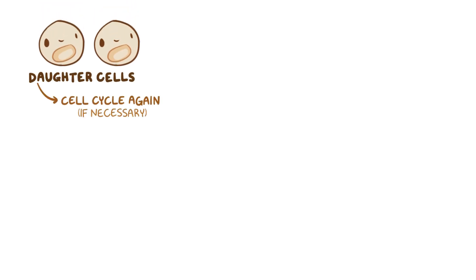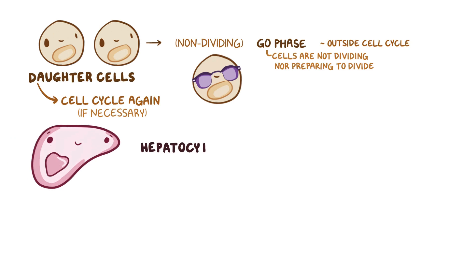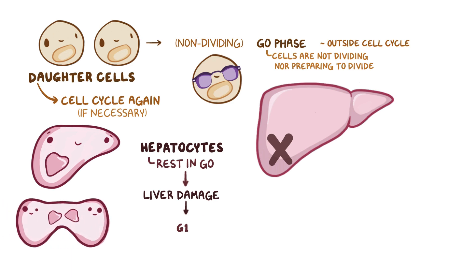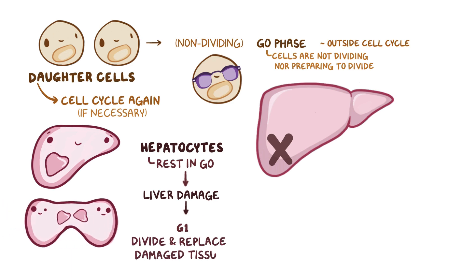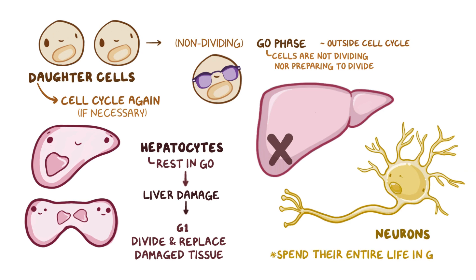Both daughter cells can enter the cell cycle once more if they need to. If they don't, they enter the non-dividing G0 phase. G0 is considered to be a phase outside the cell cycle, because while the cells are living, they're neither dividing nor preparing to divide. An example of this would be hepatocytes, which rest in G0 until there's liver damage, at which point they enter G1 again so that they can divide and replace damaged tissue. Another example would be neurons, which spend their entire life in G0.